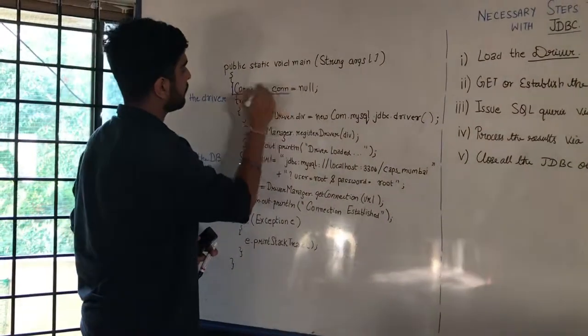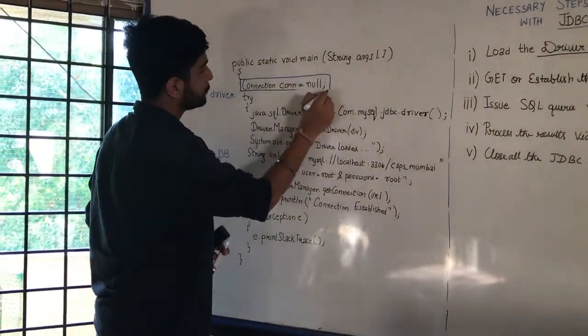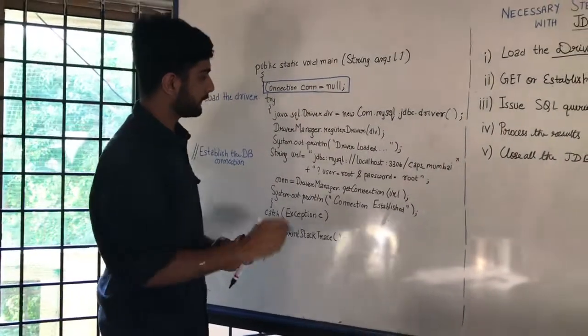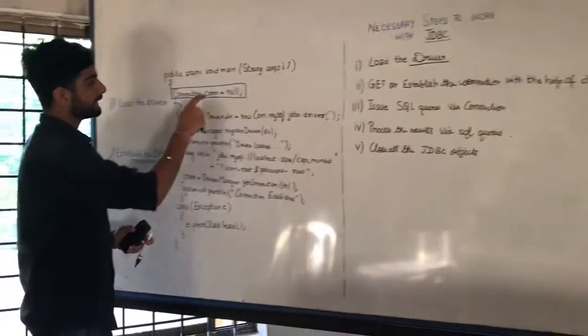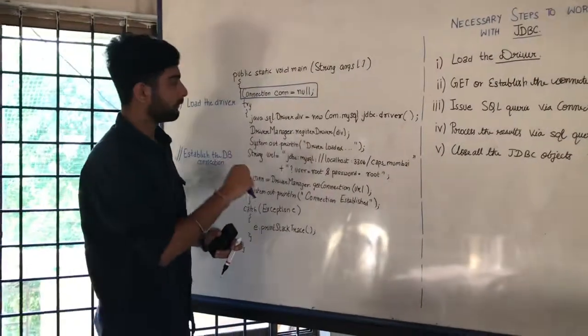And we declare this connection object equal to null making this to be a global variable. Because as we know we have to close all the JDBC objects, this has to be a global variable and not a local variable.